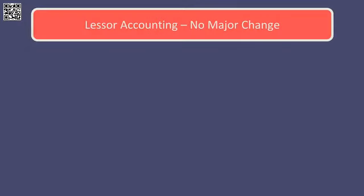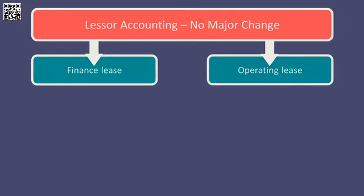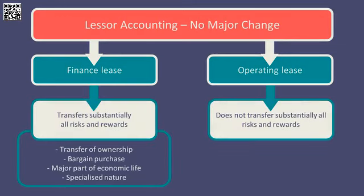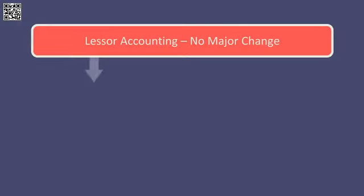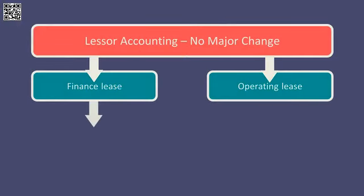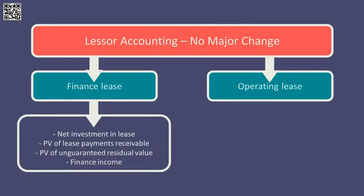Let's think about lessor accounting — the good news is there are no major changes from the old standard IAS 17. IFRS 16 requires us to identify whether we are dealing with a finance lease or an operating lease from the lessor's perspective. If we are leasing the equipment out under a finance lease, then what we have to calculate is the net investment in the lease. This is the present value of the lease payments receivable by the lessor together with the present value of any unguaranteed residual value, and based upon this we calculate finance income using the interest rate implicit in the agreement.